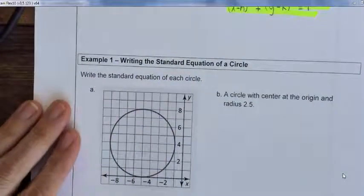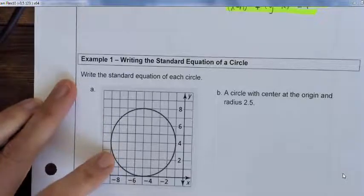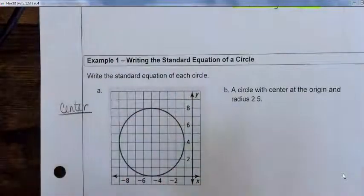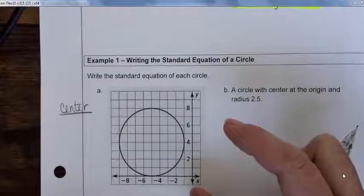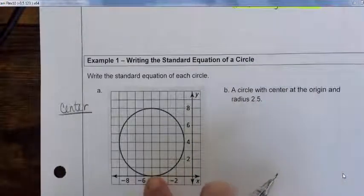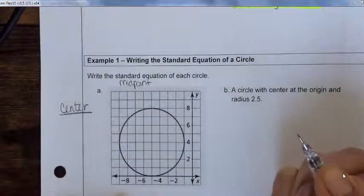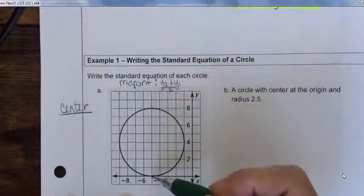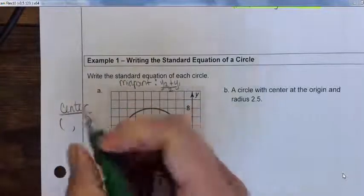For part (a), we're going to write the standard equation of a circle given the graph. The first thing we have to do is find the center. If you can't visualize it, find the most extreme points on the circle — the highest and lowest. The highest point on the y-axis is 8 and the lowest is 0. To find the midpoint, average the two values: (8 + 0) / 2 = 4. So the y-value of the center is 4.